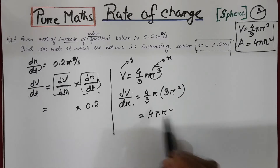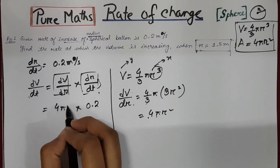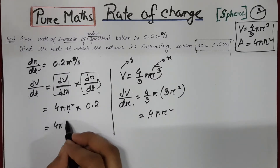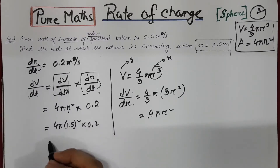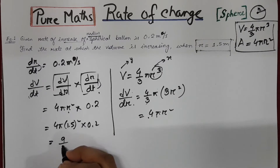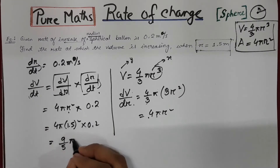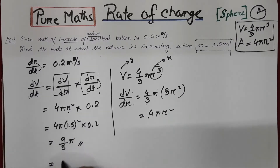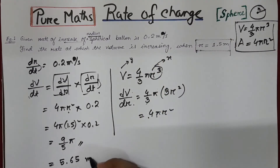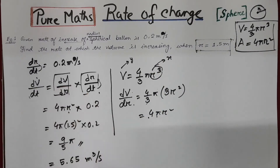So this is your dV/dr. I am substituting this value in. Now you can put your value of r = 1.5, giving 4π (1.5)² × 0.2. If they ask you to keep the answer in terms of π, write it in that form; otherwise take the decimal: 5.65. The unit is meters cubed per second, because this is about volume.